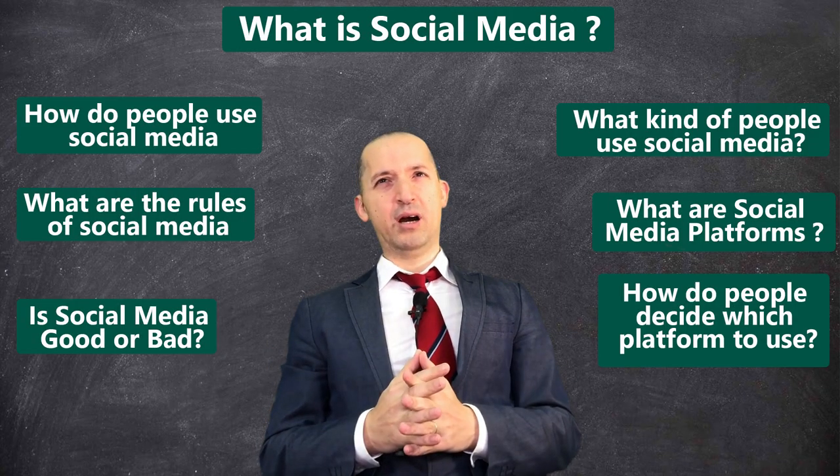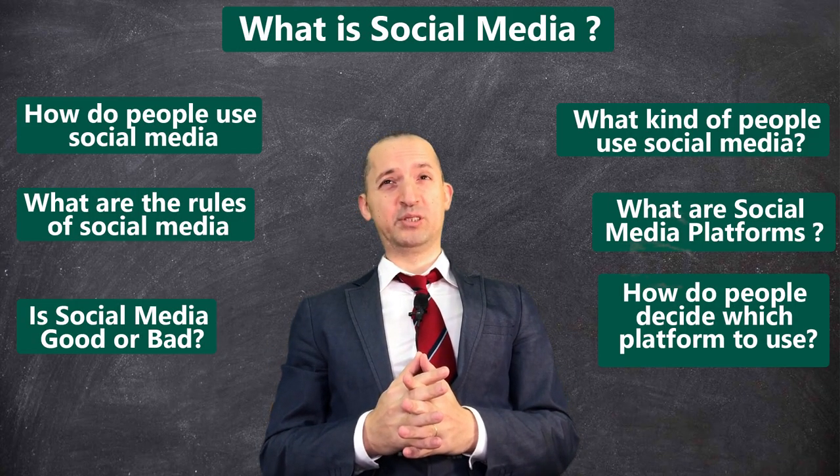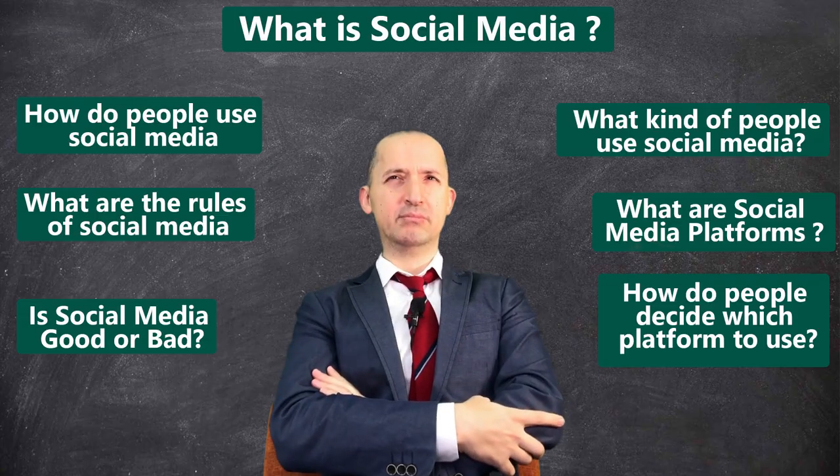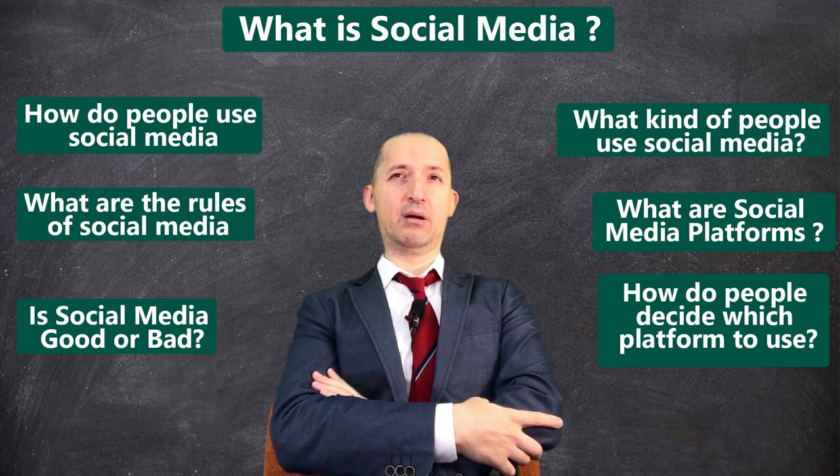Adam asks what happens if we share information about ourselves in real life rather than on social media. The professor shares a humorous anecdote about a friend who walks the street announcing what he did that day, shows people pictures of his breakfast, and yells at people — and he has four followers: three cops and one psychiatrist.